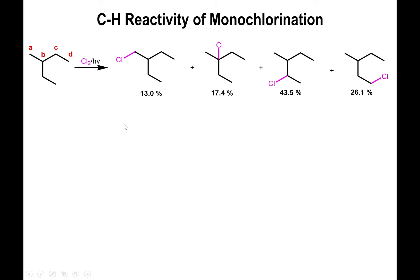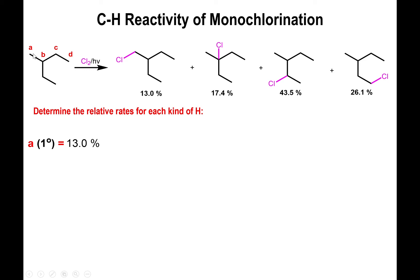Now I'm going to convert each of these yields into a relative rate associated with the type of carbon-hydrogen bond in each molecule. Starting with position A: type A, from the original reactant, is a carbon bearing three hydrogens and bonded to one other carbon — so it is a primary carbon. This type of hydrogen yields 13.0% of the corresponding product.